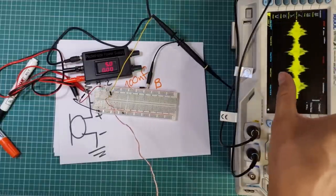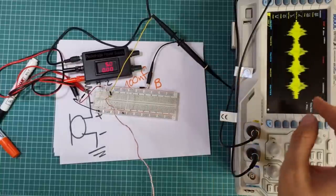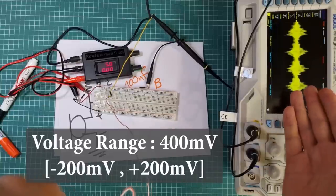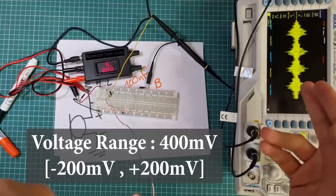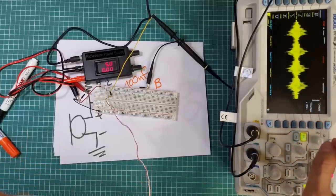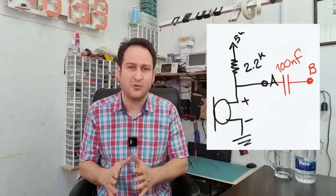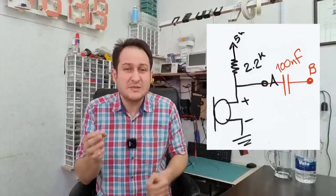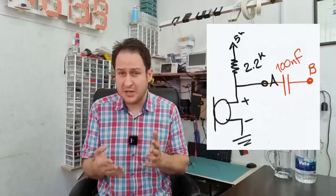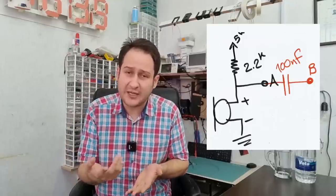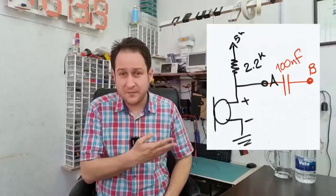The voice signal fits in four squares in the Y direction, so we got about 400 millivolts peak-to-peak voice signal. Minimum voltage is 200 millivolts negative and maximum is 200 millivolts positive — yes, we have negative voltage on point B. We know a capacitor is needed between points A and B to block the DC value and let the voice signal pass. But you may ask why I use 100 nanofarad specifically — why not 10 nanofarad or 1 microfarad?